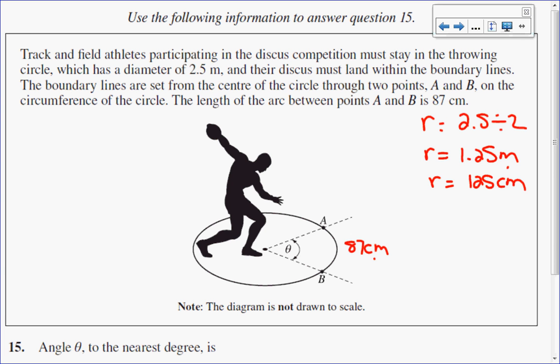So let's go to our formula that we have on our formula sheet, which is theta equals arc length over radius. Now theta is what we are solving for, and it will be the ratio of the arc length over the radius.